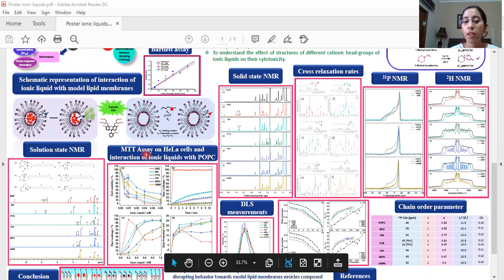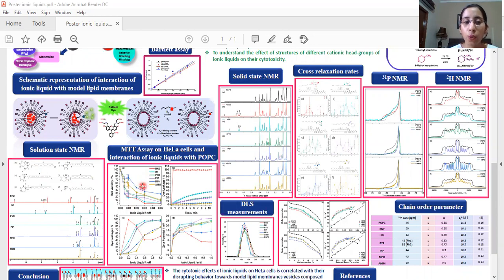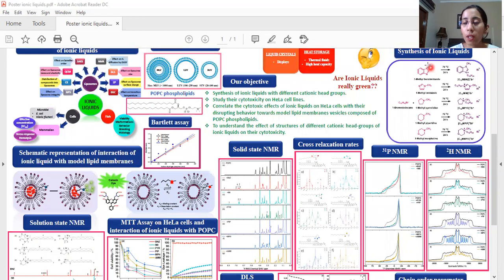MTT assay which is a colorimetric method to determine the number of viable cells when the ionic liquids are added to HeLa cells. It was found that the benzimidazolium was the most toxic and the morpholinium was the least toxic among all the ionic liquids.